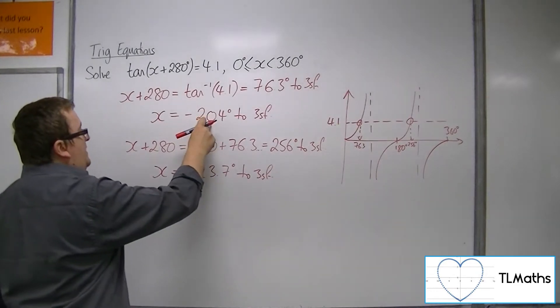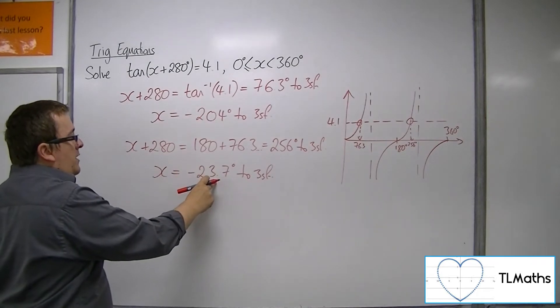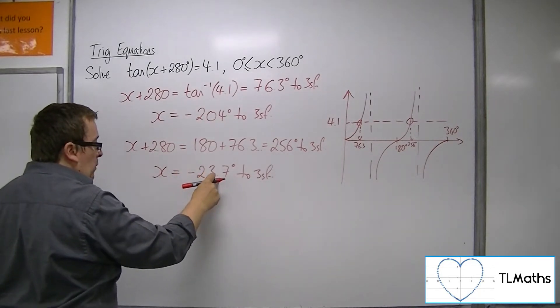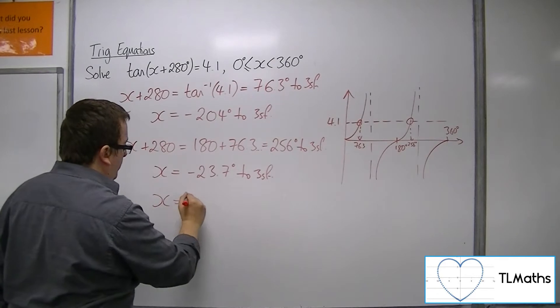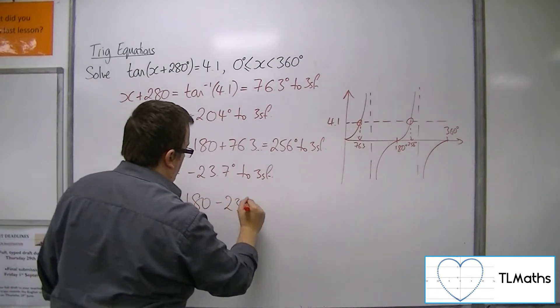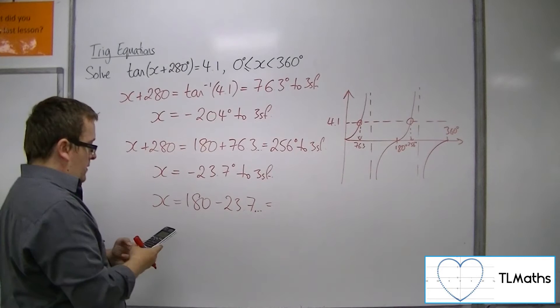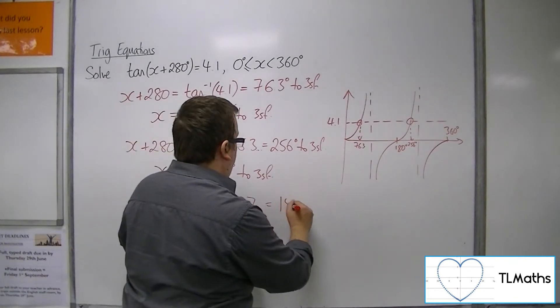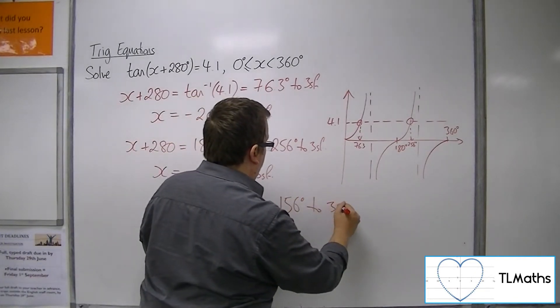So, if I add on 180 to that one, I get that one, OK? So, if I add on 180 to this one, OK, I get 156 degrees to 3 sig fig.